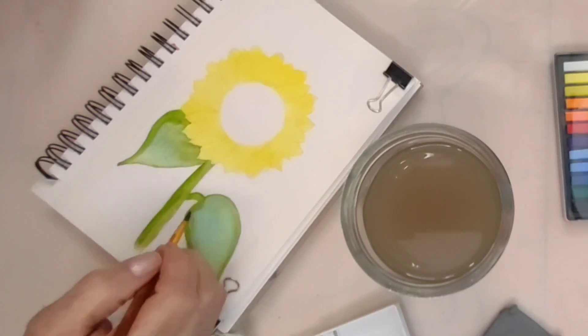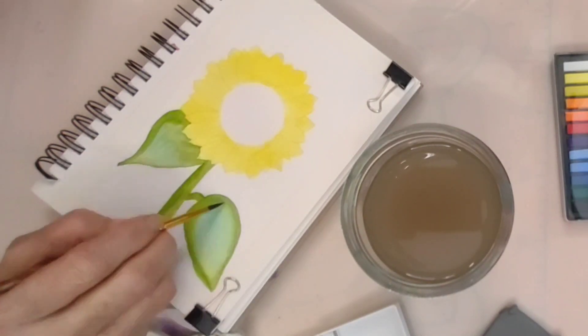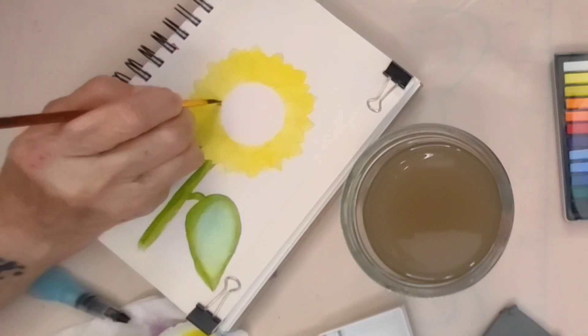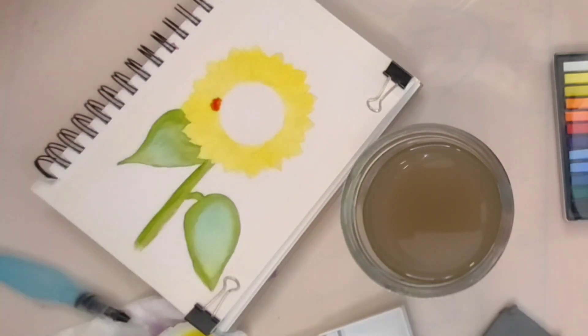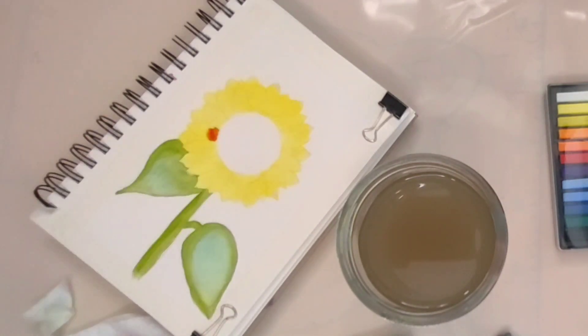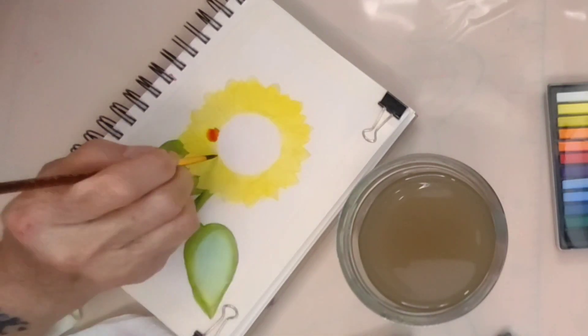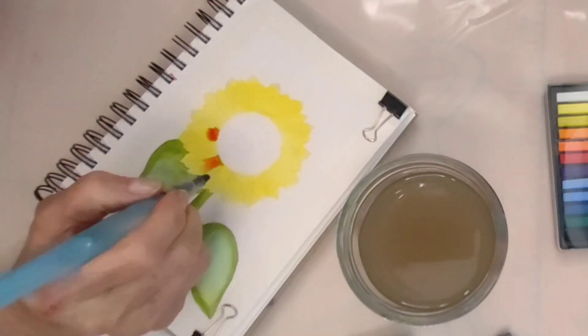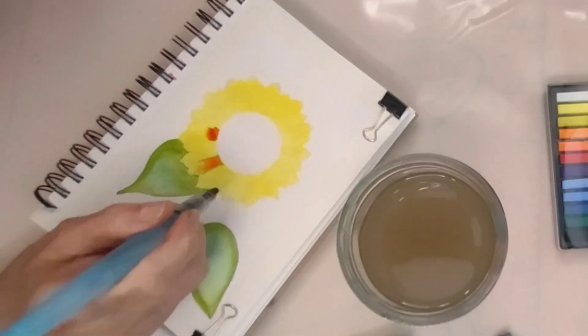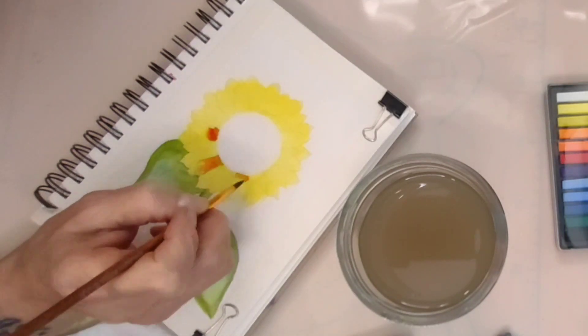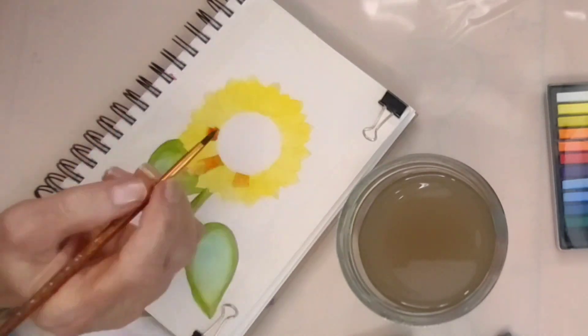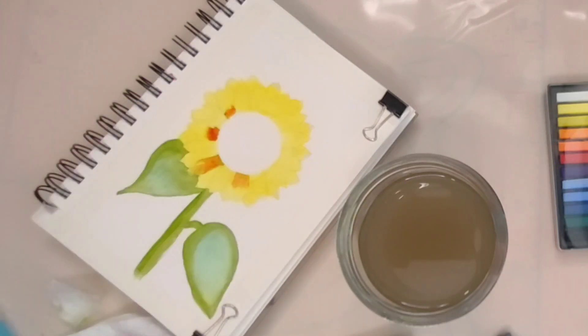One of the most widely recognized symbolic meanings of sunflowers is their association with positivity and joy. The bright yellow petals and the sunlight-like appearance of the flower evoke feelings of happiness and warmth. Sunflowers have the power to uplift our spirits and bring a sense of optimism to any space.